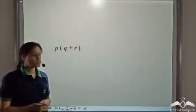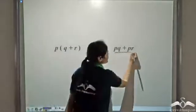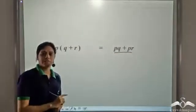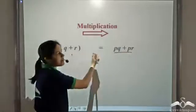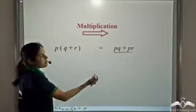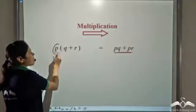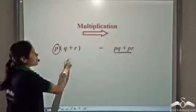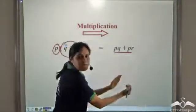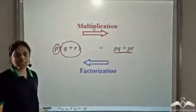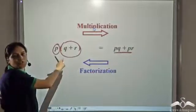If we have p into (q + r), we can write it as pq + pr. Observe that these are the same expression. Going from p(q + r) to pq + pr is multiplication. Now if we can write pq + pr as p into (q + r), then p is a factor of pq + pr, and (q + r) is also a factor of pq + pr. This process is known as factorization. So going from p(q+r) to pq+pr is multiplication, and coming back is factorization.